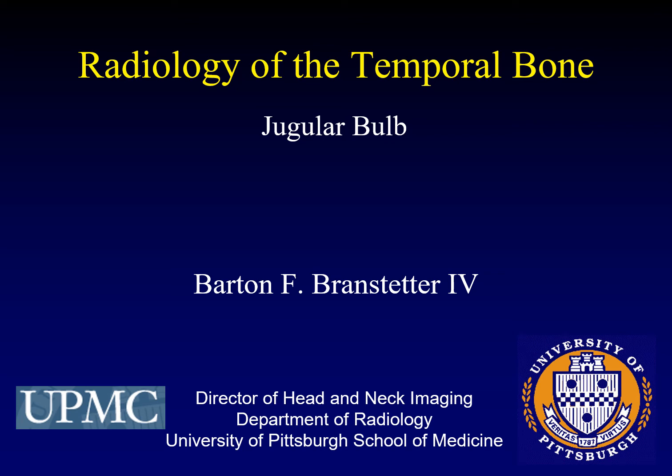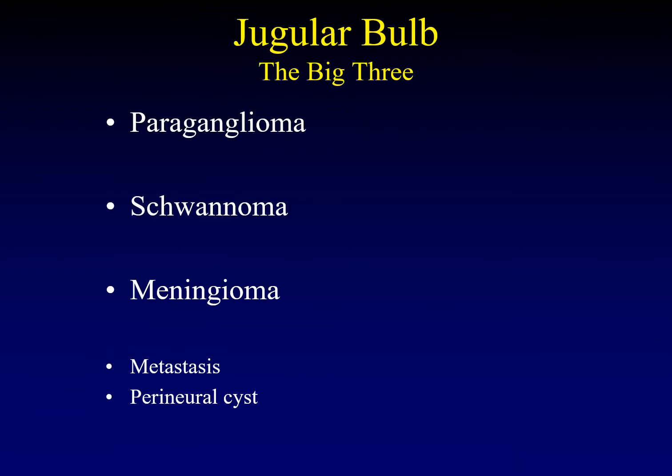The next area of the temporal bone we're going to discuss is the jugular bulb. When talking about the jugular bulb, there are three major diagnoses to consider: paragangliomas, schwannomas, and meningiomas. Unfortunately, all three can be described as briskly enhancing masses centered in the jugular bulb. To distinguish them, we use their effect on the underlying bone — which means sometimes you need to grab a CT if all you have is an MR, because the effect on bone is critical to this differential diagnosis.